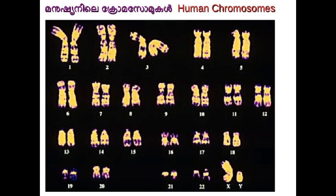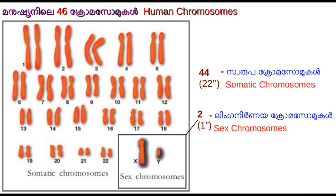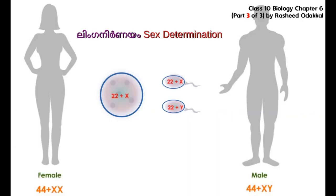46 chromosomes are seen in each cell of a human being, out of which 44 are somatic chromosomes and 2 are sex chromosomes. Females have 2 X chromosomes and males have 1 X chromosome and 1 Y chromosome as sex chromosomes. Thus, the genetic makeup of a female is 44+XX and that of a male is 44+XY. The X-Y chromosomes of the father determine whether the child is male or female.